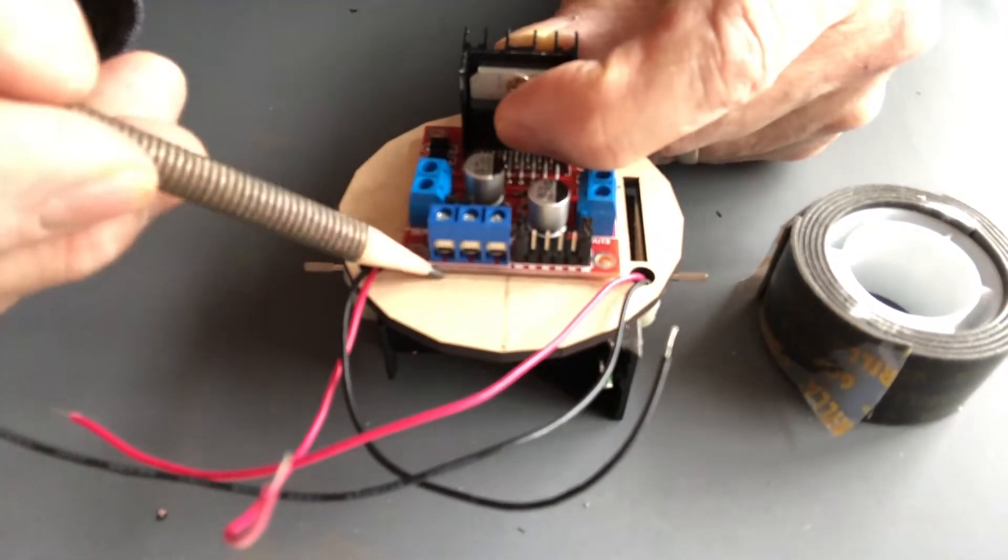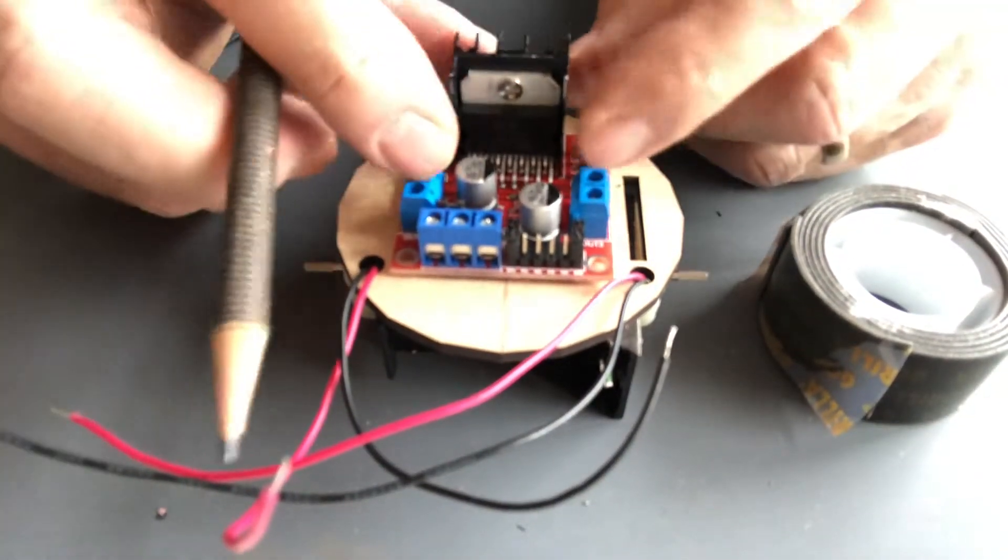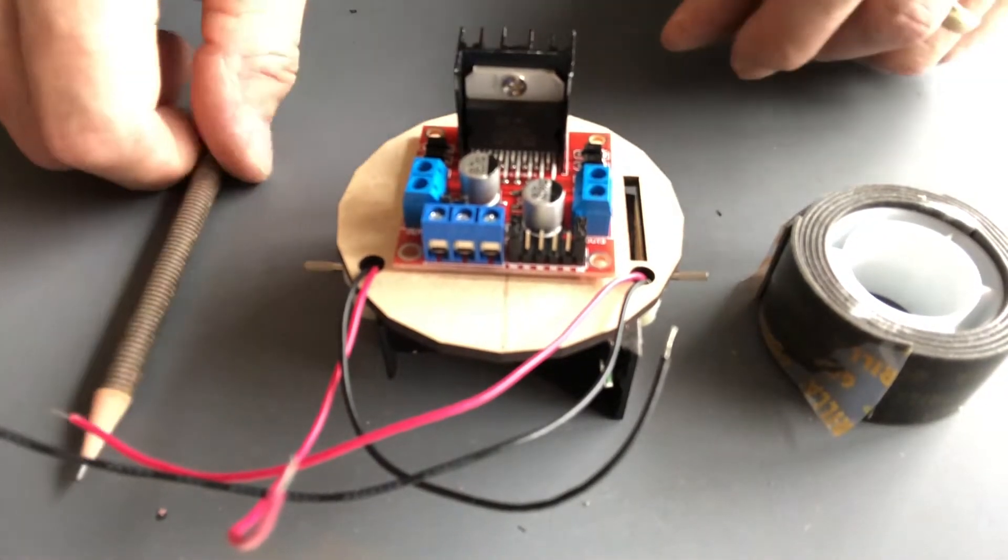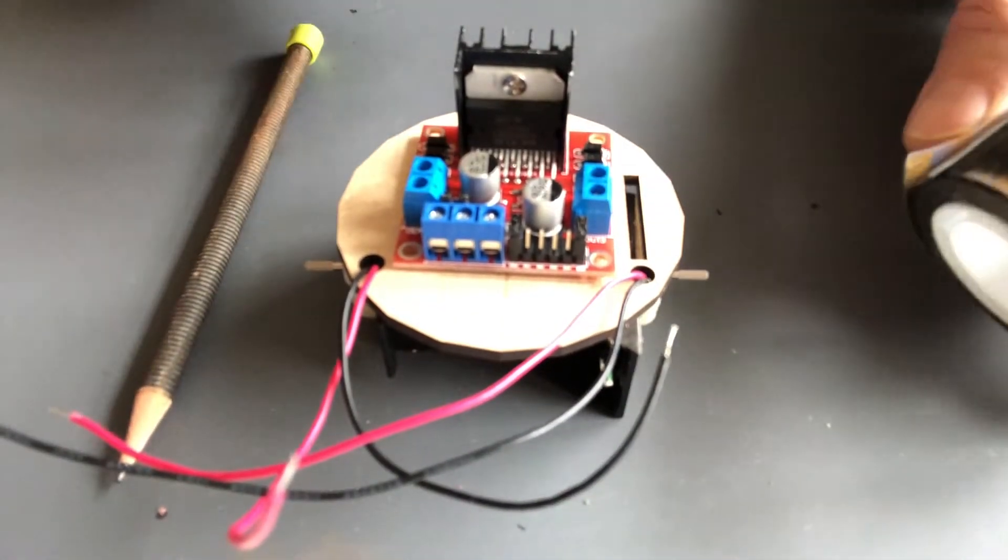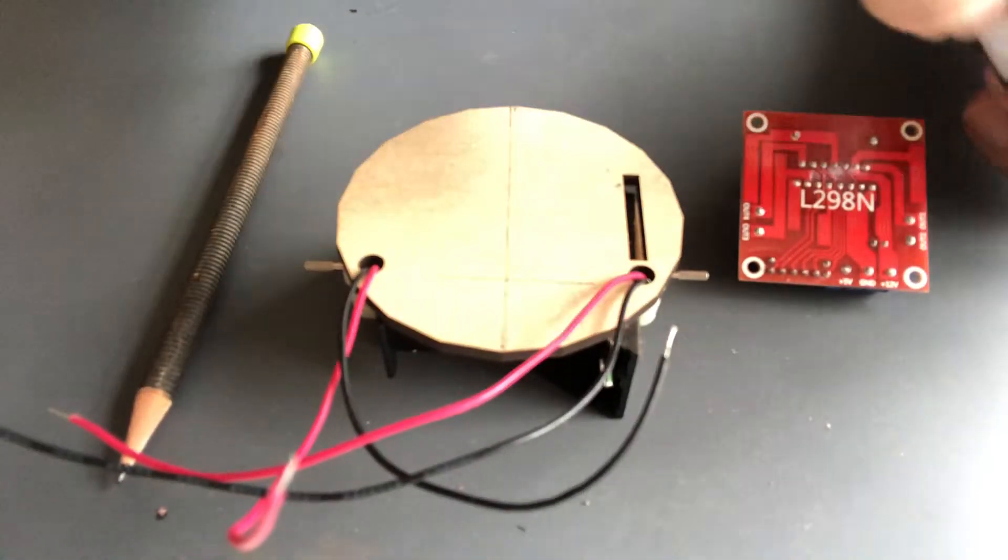I'm just going to draw a line like that to give me some guidance when I adhere it. We're going to use once again some double-sided mounting tape, except this time we're going to put two pieces on our base.